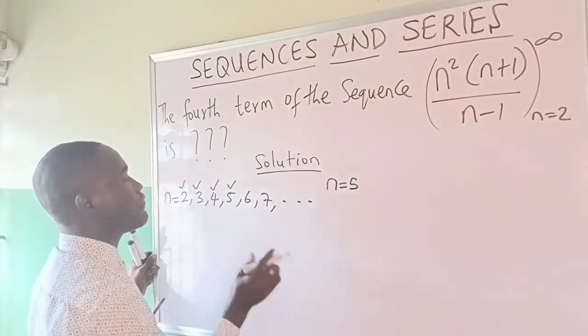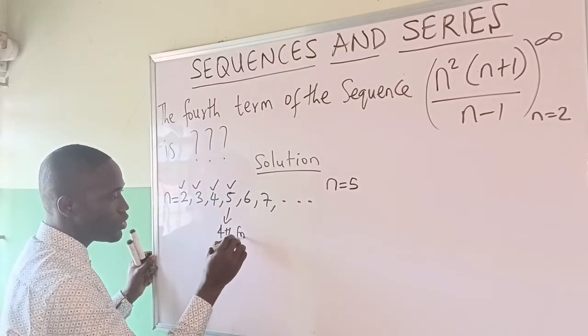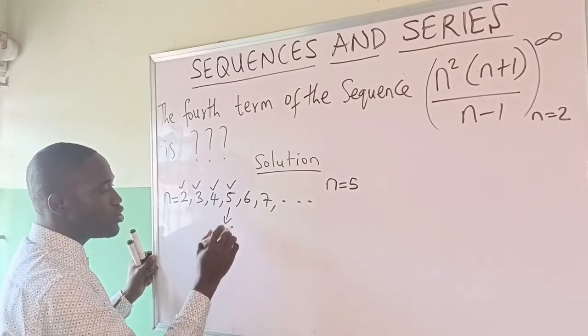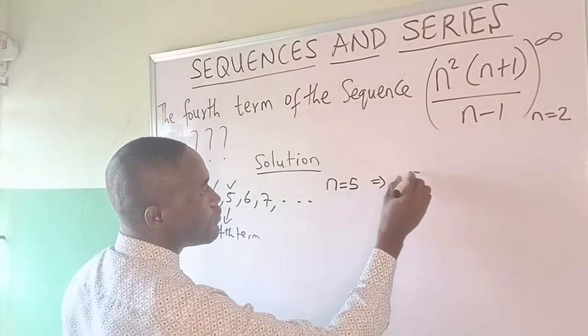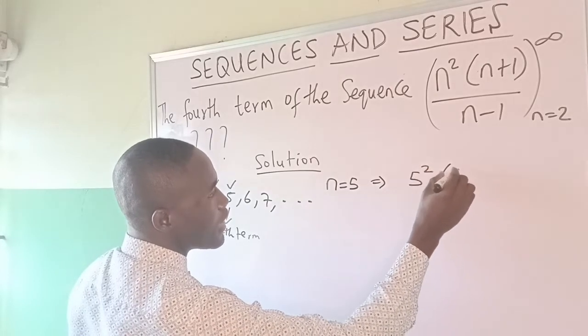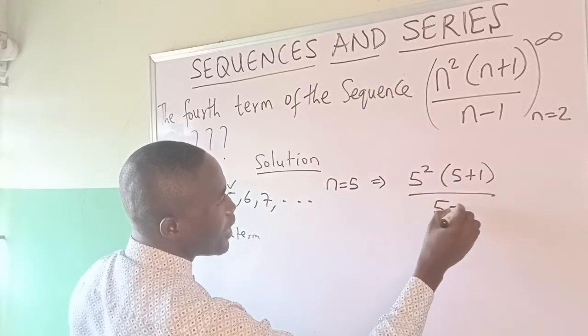So what you now do is that you put n=5 here. That will imply 5²(5+1)/(5-1). 5 squared is 25, bracket 5+1 is 6, over 5-1 is 4.